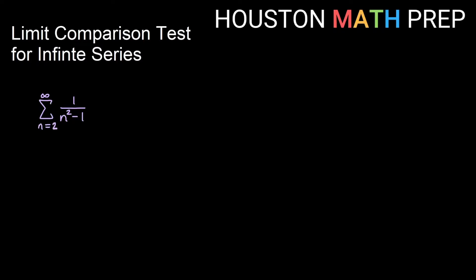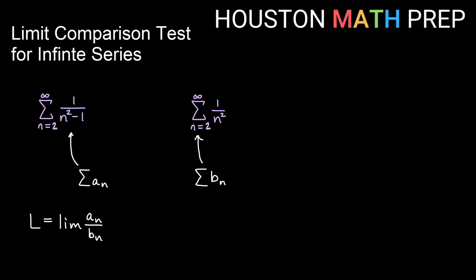Looking at the sum of one over n squared minus one — which is one that we couldn't figure out based on the inequality direction in our direct comparison test video for infinite series — we'll think of this as what we're trying to decide converges or diverges. This is our sum of a sub n in the limit comparison test. We want to choose something that is a similar series that we know its behavior, so let's say we choose one over n squared.